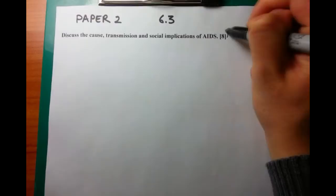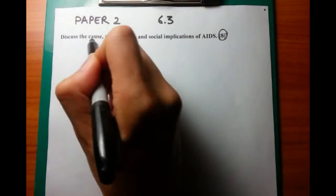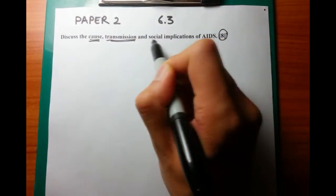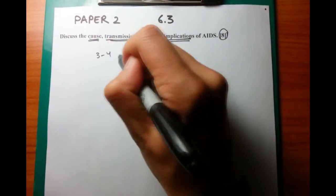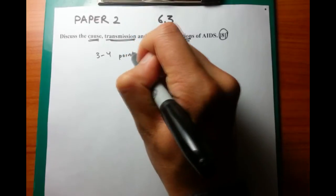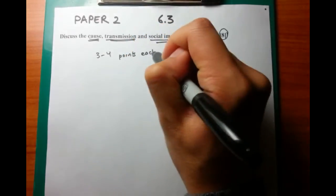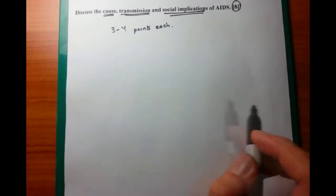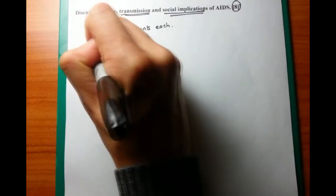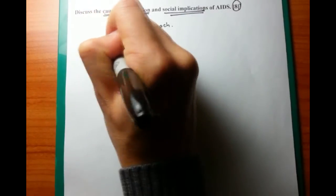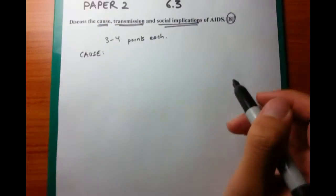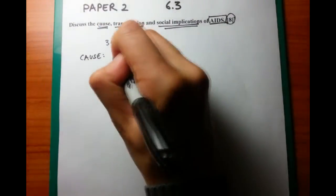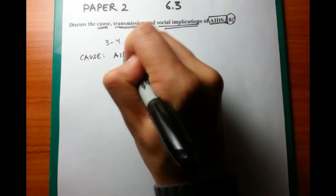This next question is a difficult question — eight marks — and it's asking you to discuss the cause, transmission, and social implications of AIDS. Because the question is broken down into cause, transmission, and social implications, you want to divide those eight points up into three different categories, each being roughly three to four points each.